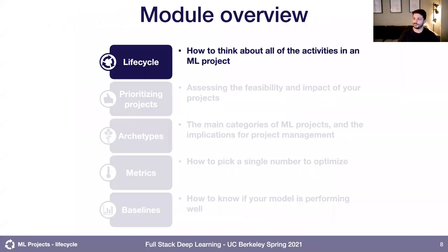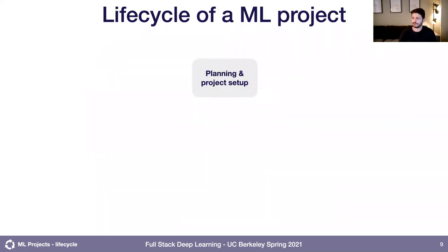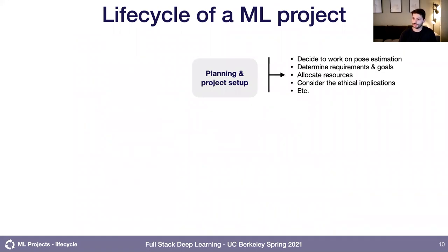Diving into the main content of the lecture. The life cycle of a machine learning project really starts with the planning and project setup phase — where you might decide to work on pose estimation at all, determine requirements and goals, allocate resources, consider ethical implications, and so on. Once you have a plan, you move into the data collection and labeling phase, where you collect the objects to train your model on, set up sensors like cameras, start capturing images, and figure out how to annotate those images with ground truth.